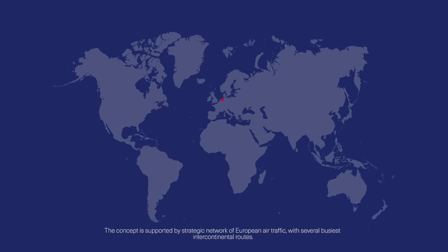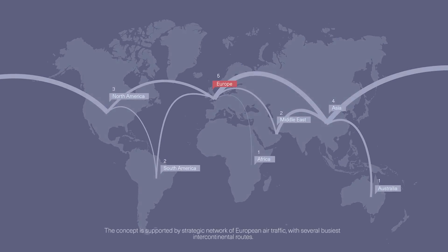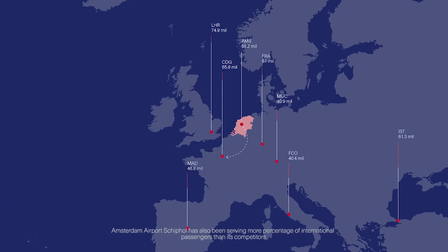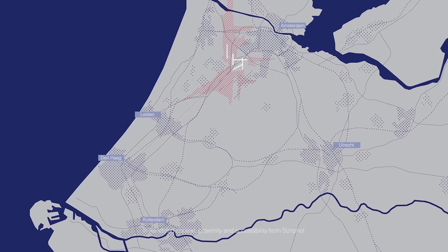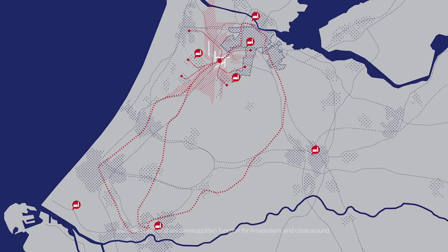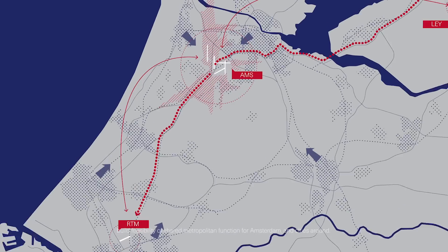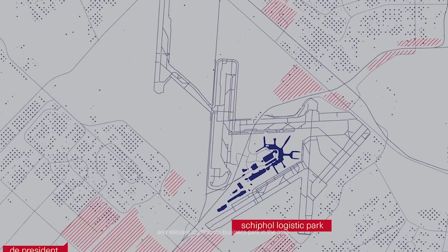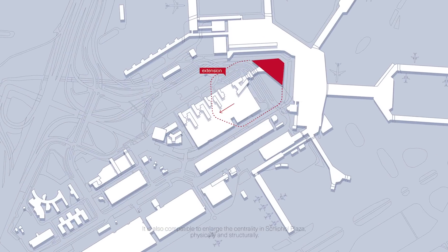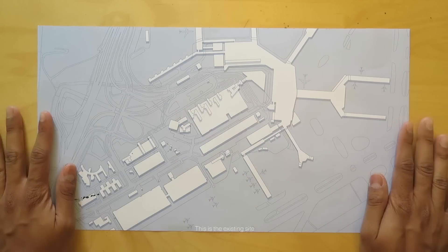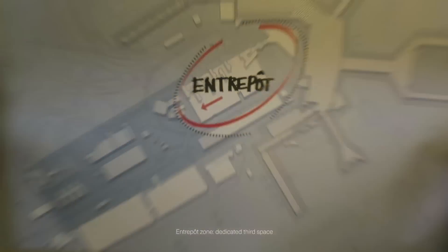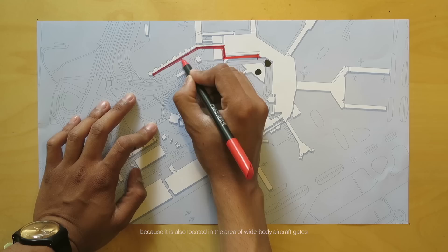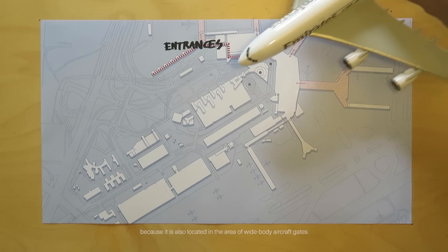The concept is supported by a strategic network of European traffic with several busy intercontinental routes. Amsterdam Airport Schiphol has also been serving a growing percentage of international passengers. In the grand scale, proximity and accessibility from Schiphol build visibility of a shared metropolitan function for Amsterdam and surrounding cities. The anthropo is an addition to complete the image of an aerotropolis and is relevant to enhance business parks in the area, and also compatible to enlarge the centrality in Schiphol Plaza.